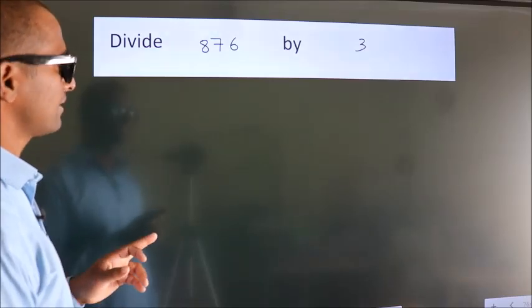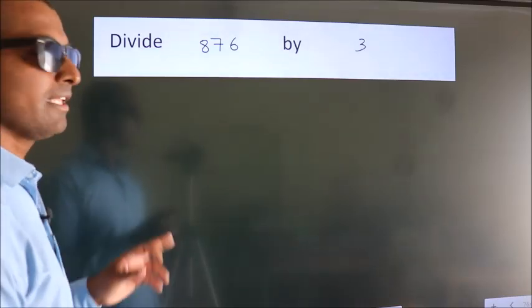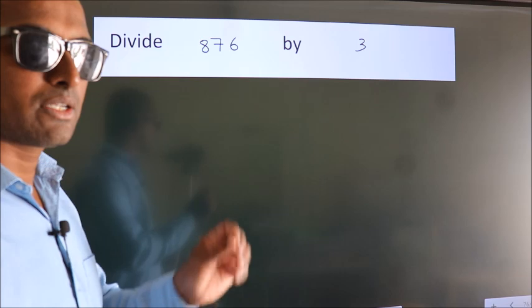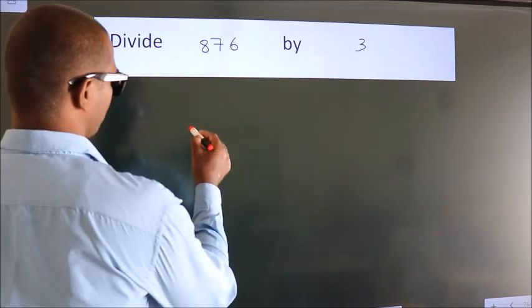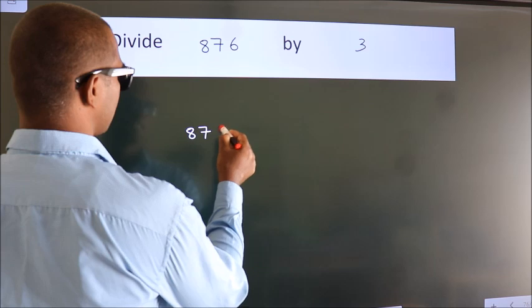To divide 876 by 3, we should frame the division this way: 876 here.